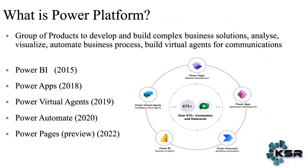Next is Power Automate, which is used to automate business processes. For example, when you create an account on a website and receive a confirmation email automatically — that is achieved using Power Automate. Last is Power Pages, a tool with which we can create various external websites. So in Power Platform, you are able to build a product end to end using Power Apps, Power Virtual Agents, Power Automate, and Power Pages. You can build a complete business process using the Microsoft Power Platform tech stack.